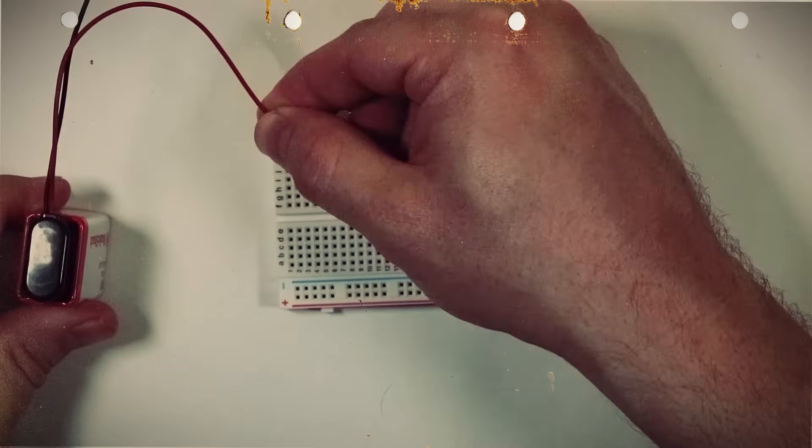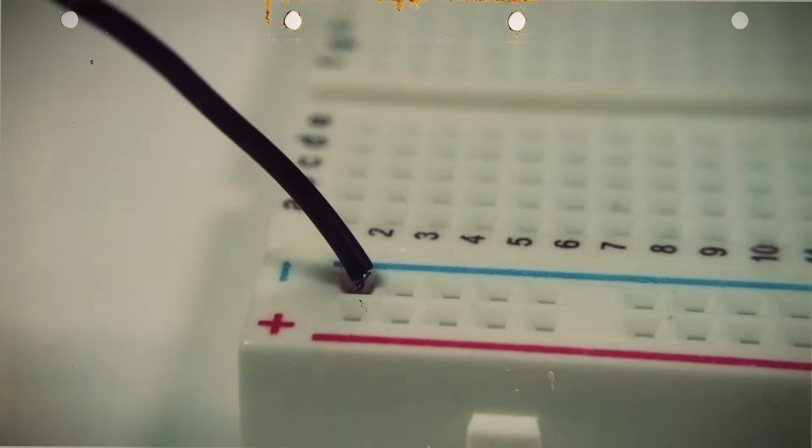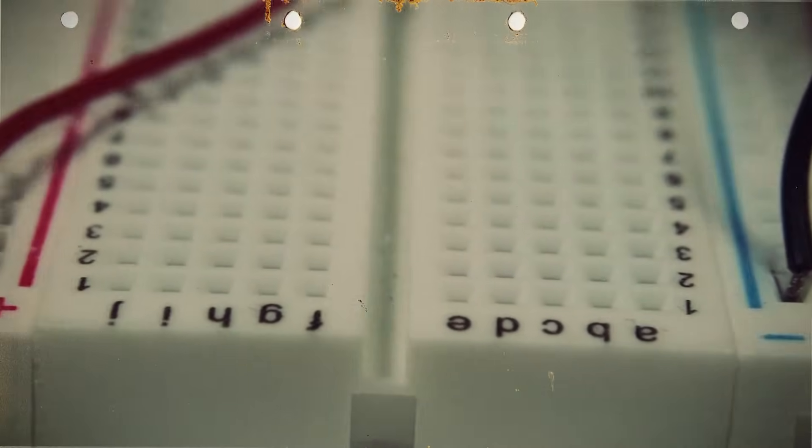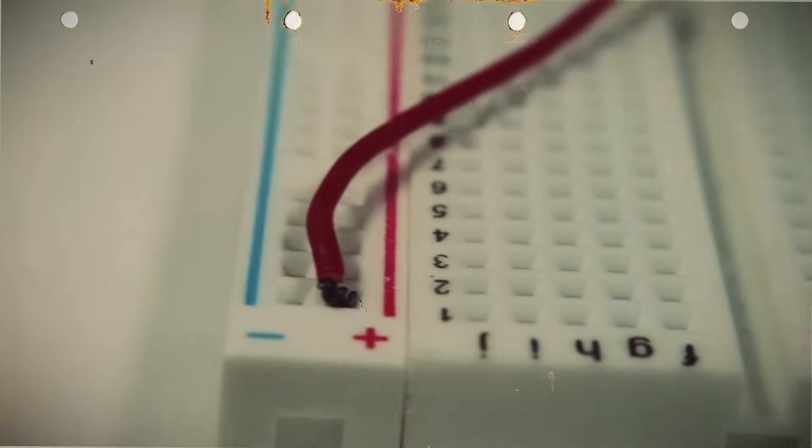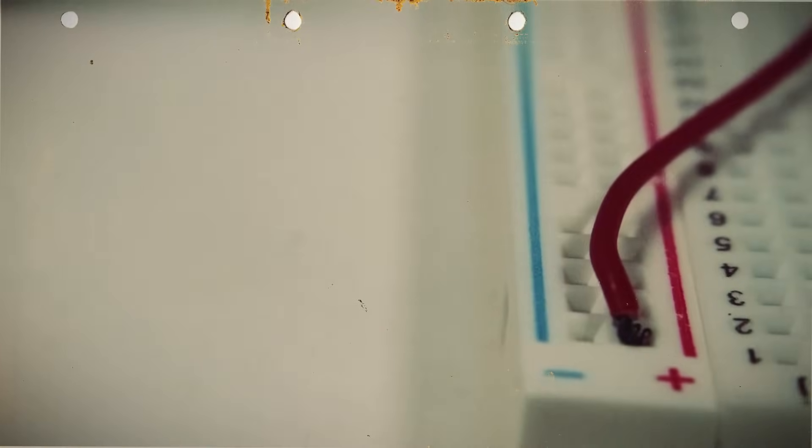Start by plugging in your power source into the power rails with the ground going to the negative rail and the positive going to the positive rail. Since mine has power rails on both sides, I'm going to have the ground and positive going to separate sides of the board.